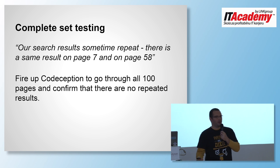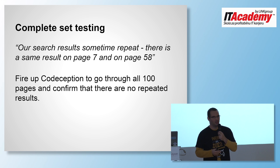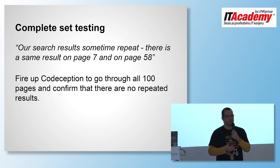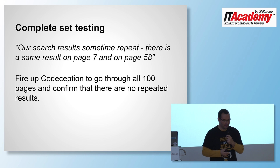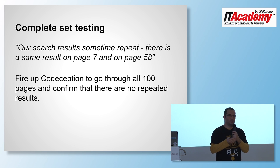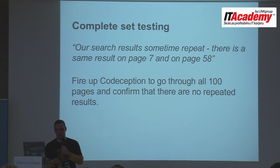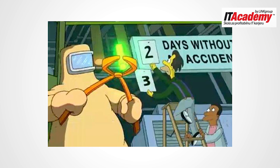Another story: I received a bug report saying search results on page two were repeating on page seven, and results from page 58 were repeating elsewhere — painful when you have 100 search result pages. Codeception let me build a system to go through all 100 pages, collect the IDs, and confirm the fix worked. More importantly, I could reproduce the same test on both my staging server and production server.